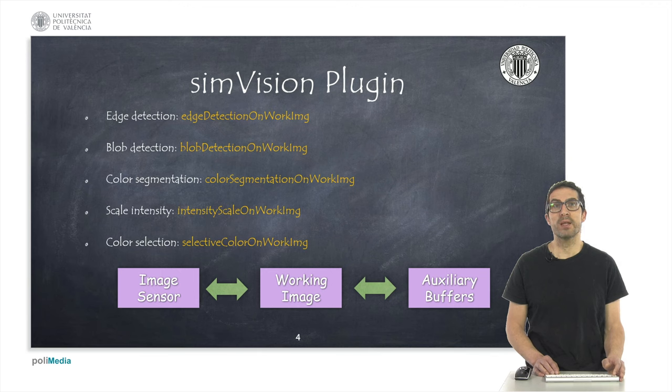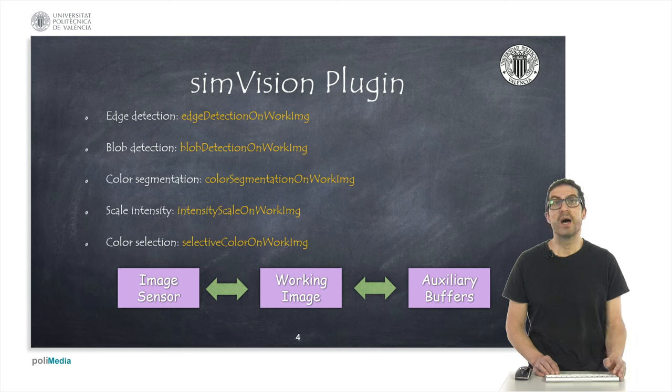On the other hand, the plugin uses the working image. This is the buffer on which all the functions that I mentioned before do the processing. And in addition to this, there are a couple of auxiliary buffers that allow us to temporarily store the result of a working image to be able to perform some operations, for instance, a subtraction.